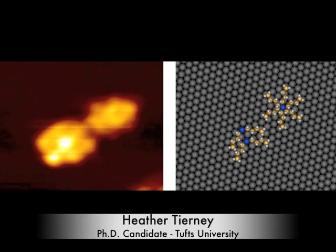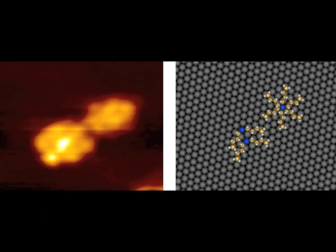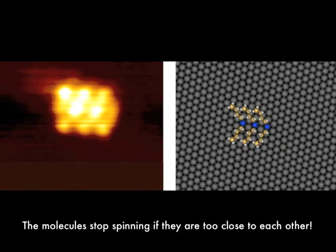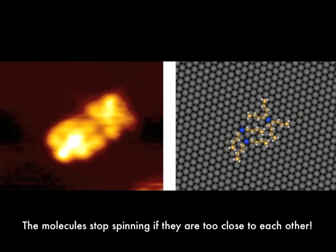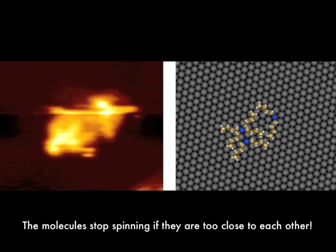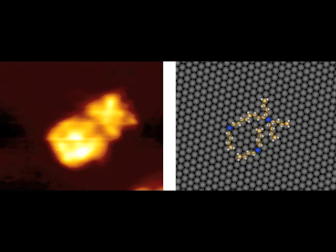We can even mechanically control the motion of our rotors by controlling the spacing between individual rotating molecules. If two rotors are pushed too close together, they stop rotating. You can imagine if two wind turbines were built too close together, that the spinning blades would get in each other's way, and their rotation would be hindered or possibly halted completely.